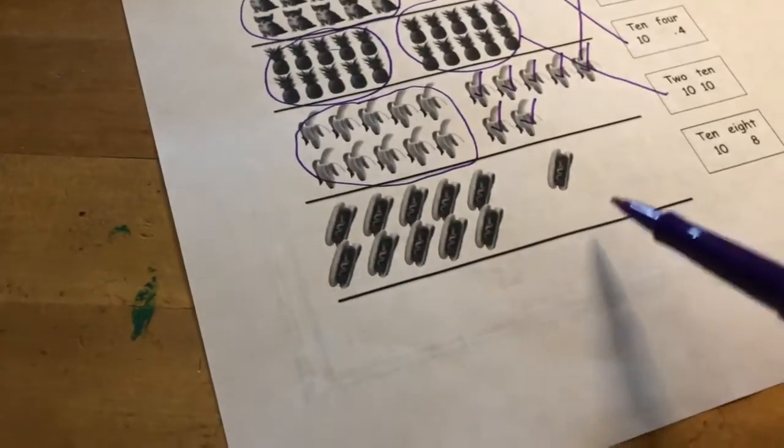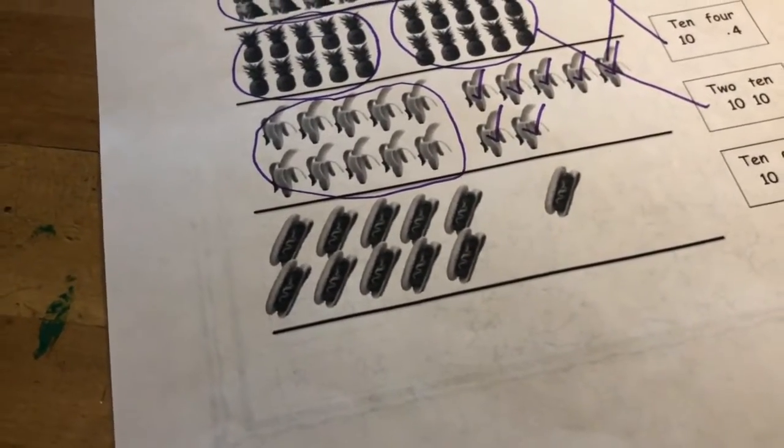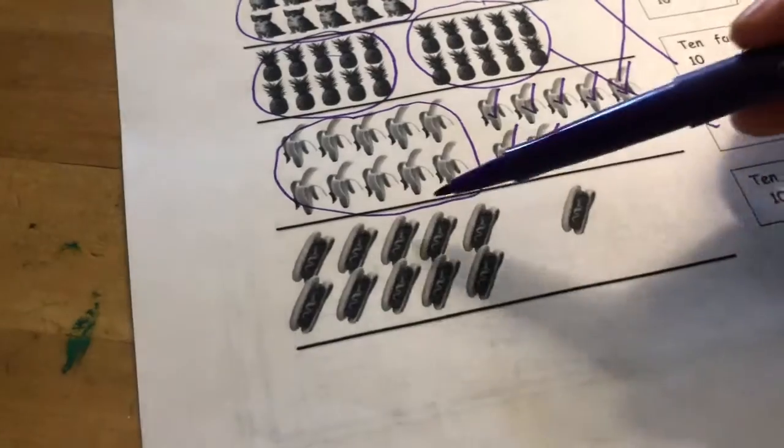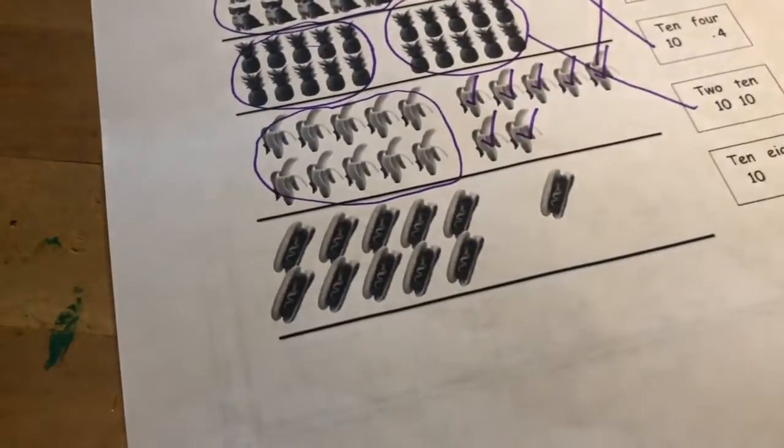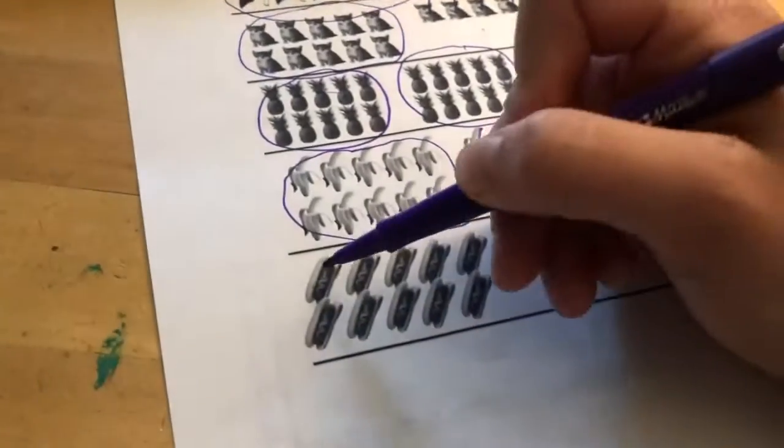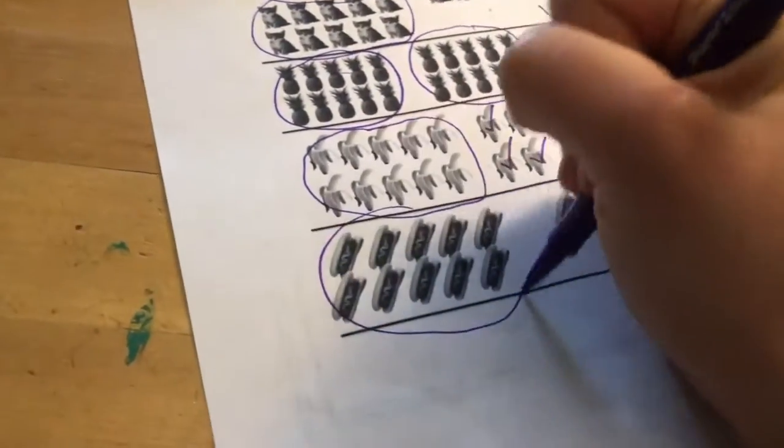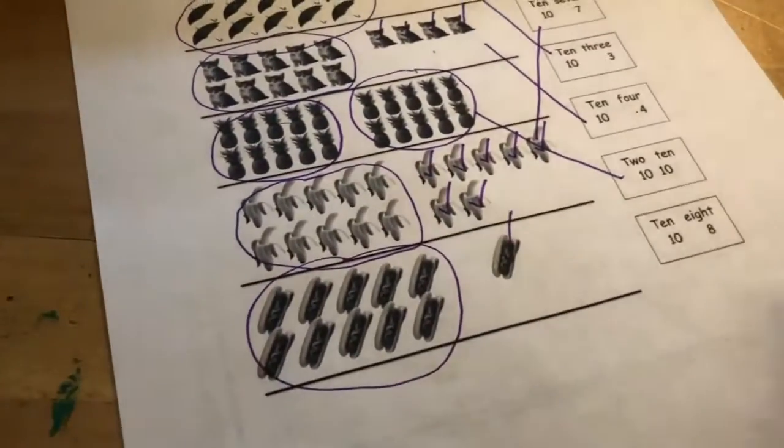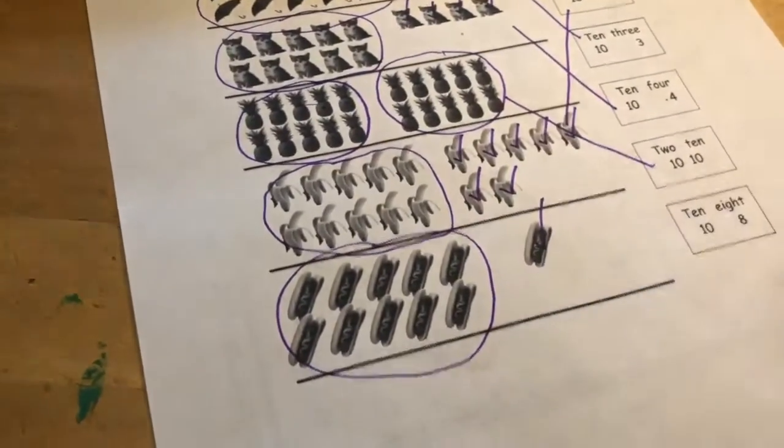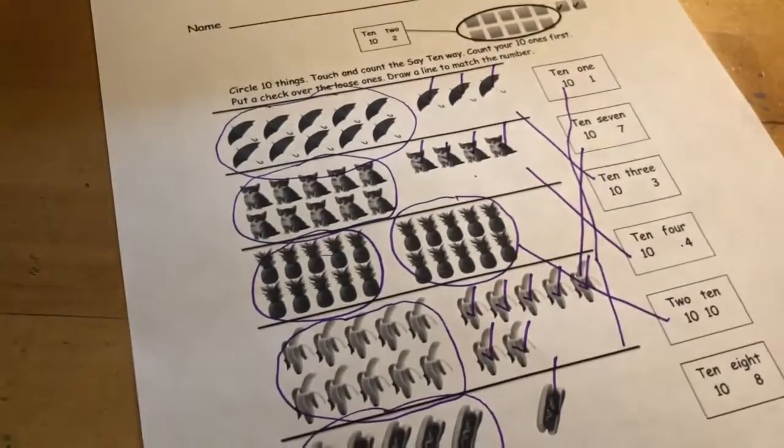And then our last one, look, we have two left. So I bet you can make a guess just by looking at it. Is it 10-1 or 10-8? If you said 10-1, you'd be right, because we can see that group of 10 and one loose. So it'd be 10-1, but let's count to check our work. 1, 2, 3, 4, 5, 6, 7, 8, 9, 10. Yep, I can circle that group of 10. My loose one. So 10-1. Yep, draw that line up to 10-1.